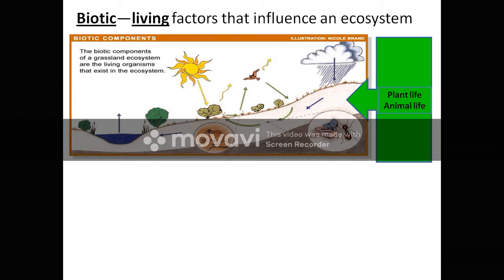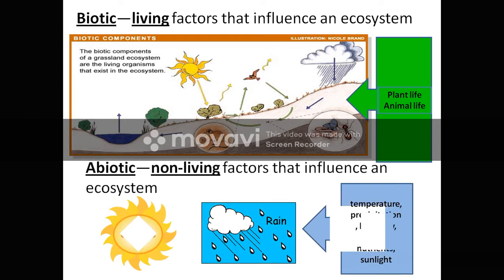Abiotic or non-living factors that influence an ecosystem include temperature, precipitation, humidity, wind, nutrients, sunlight, earthquake, rocks, flood, soil, cyclones, volcanoes, etc. All these non-living factors are included into the abiotic ecosystem.